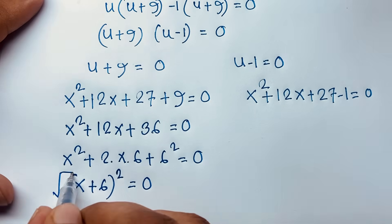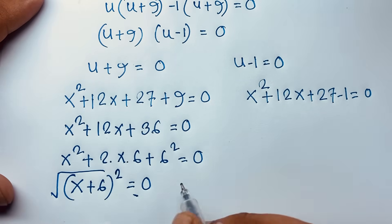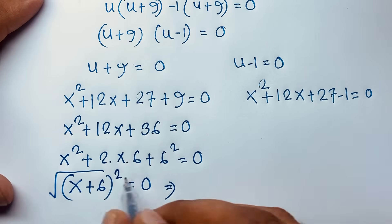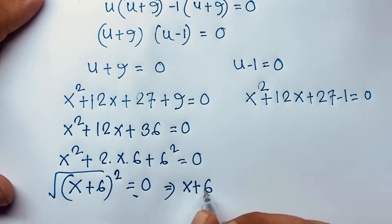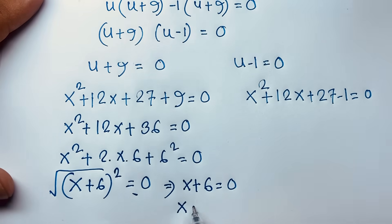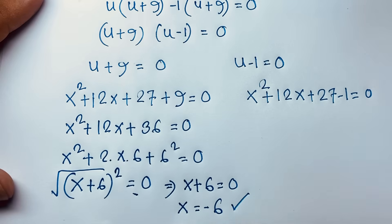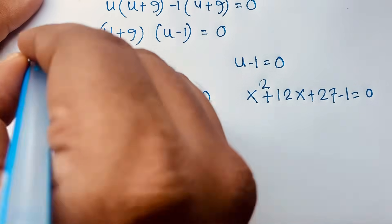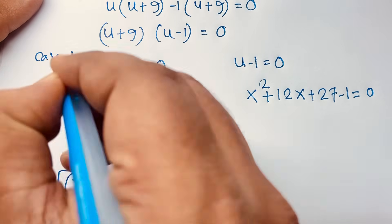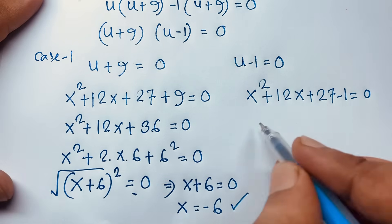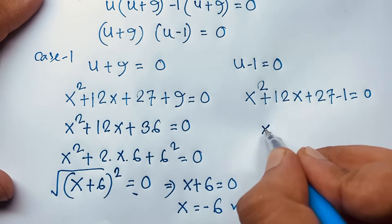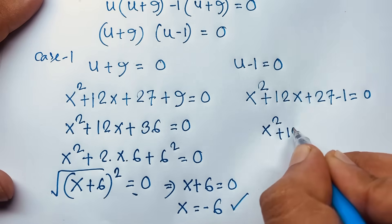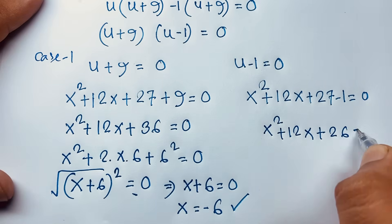Taking the square root of both sides: x + 6 = 0, so x = -6. This is the solution from Case 1.